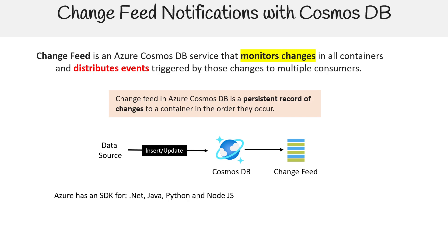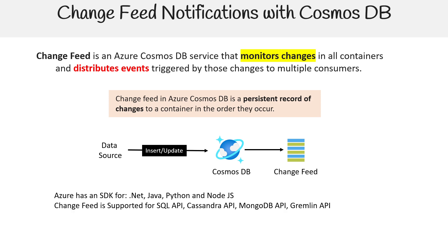Azure has an SDK for .NET, Java, Python, and JavaScript. There's nothing for Ruby — they're having lots of trouble with the Ruby SDK, but at some point they'll fix it. Change feed is supported for the SQL API, Cassandra API, MongoDB API, Gremlin API — basically all the APIs, with the exception of the Table API.